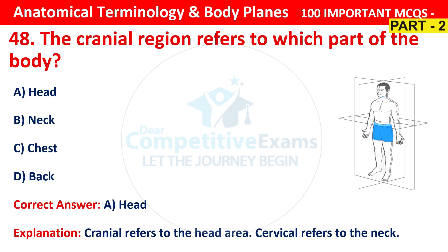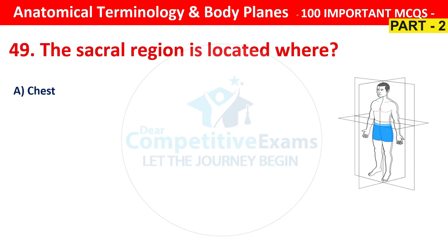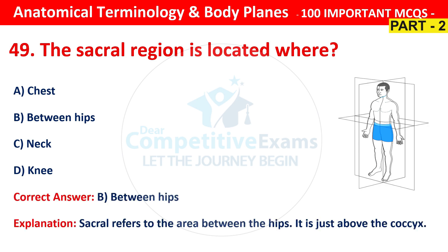Question number 49. The sacral region is located where? Is it located in the chest, between the hips, neck or knee? The right answer is B, that is between the hips. Sacral refers to the area between the hips, just above the coccyx.